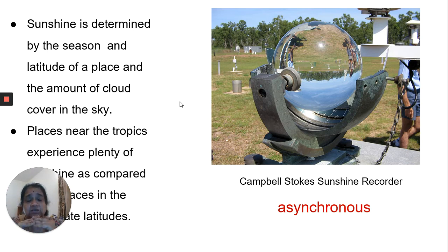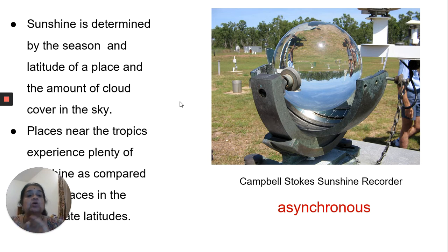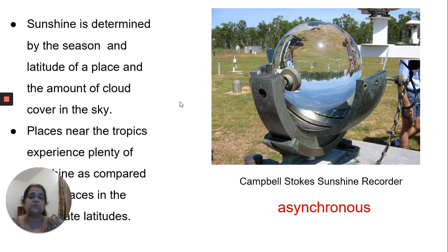Sunshine is more near the tropics, and as you go to higher latitudes the rays become more slanting and heat decreases toward the poles. You should also know that because of the earth's movement, the north pole is sometimes nearer to the sun and the south pole at other times, which affects temperature accordingly. The instrument to measure sunshine is the Campbell Stokes sunshine recorder.